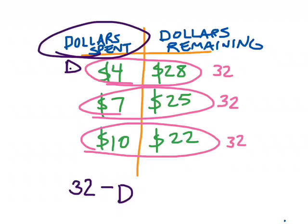Let me check it. Thirty-two minus four is twenty-eight — that works. Thirty-two minus seven is twenty-five — that works. And thirty-two minus ten is twenty-two — that works. So I think I have a variable expression that works here: thirty-two minus D accounts for the amount of money remaining in this scenario.